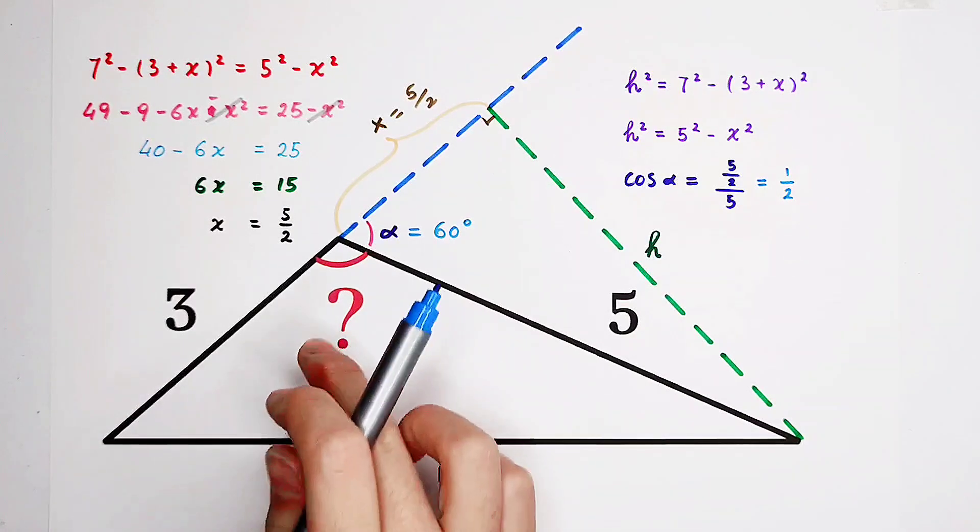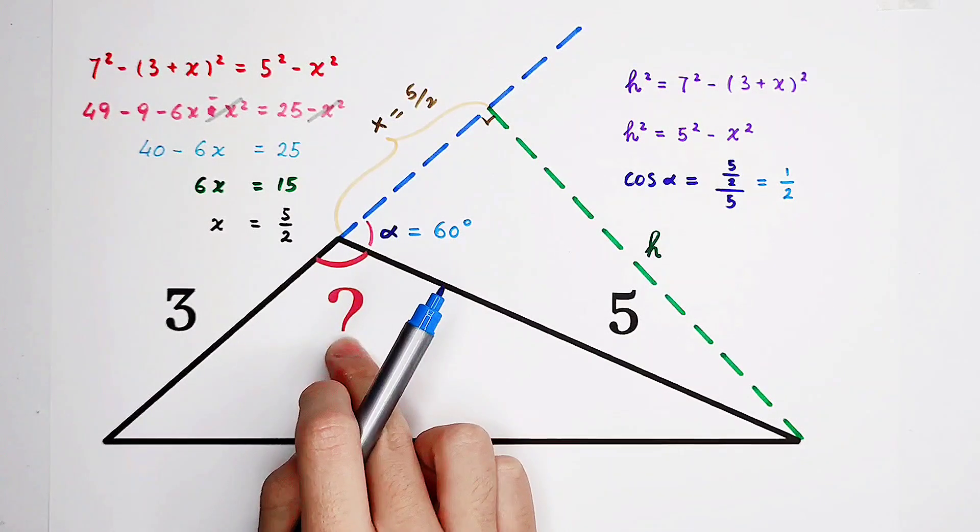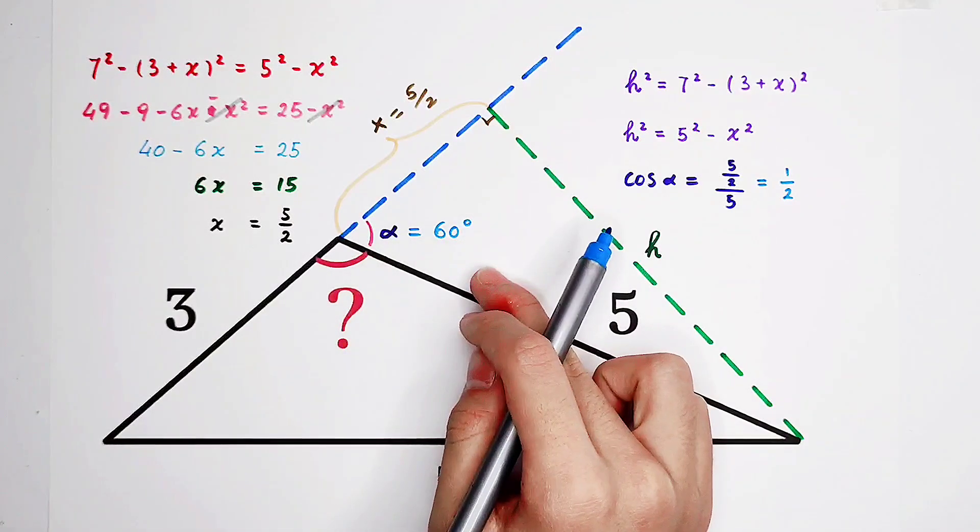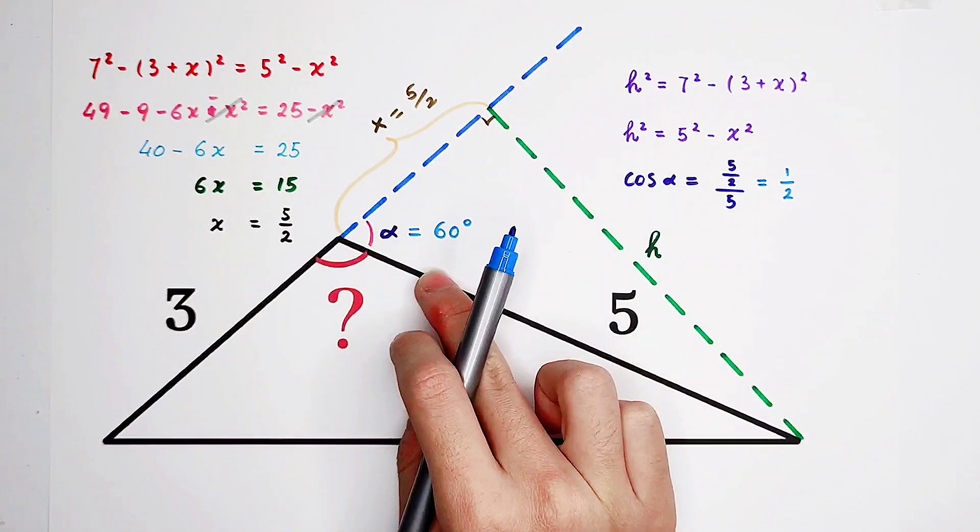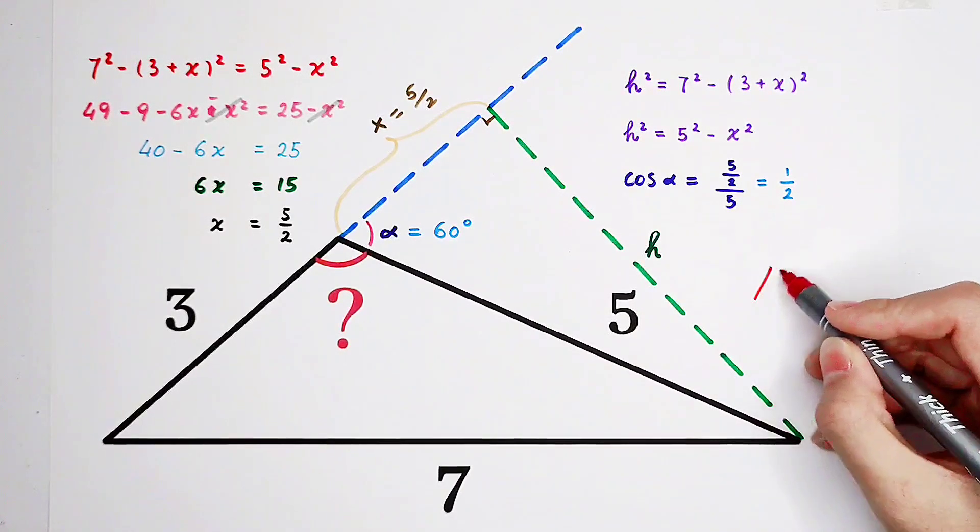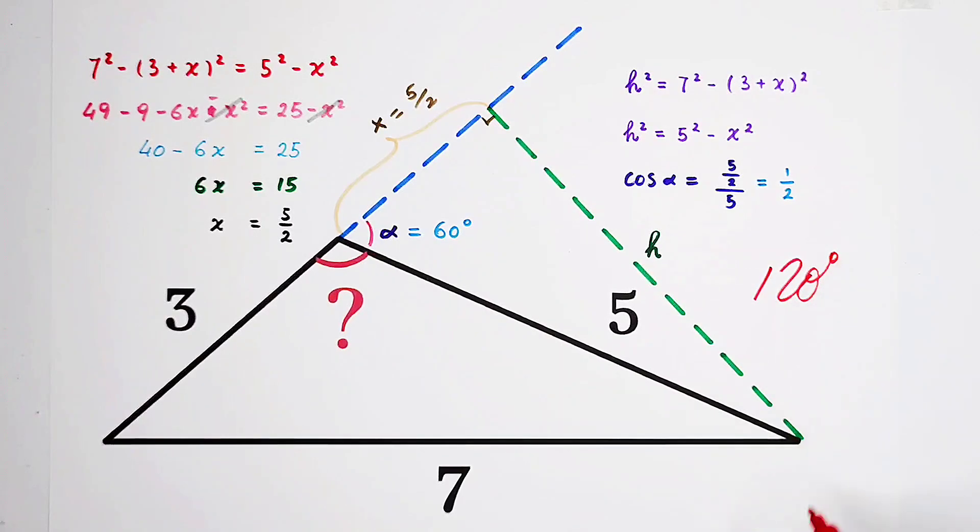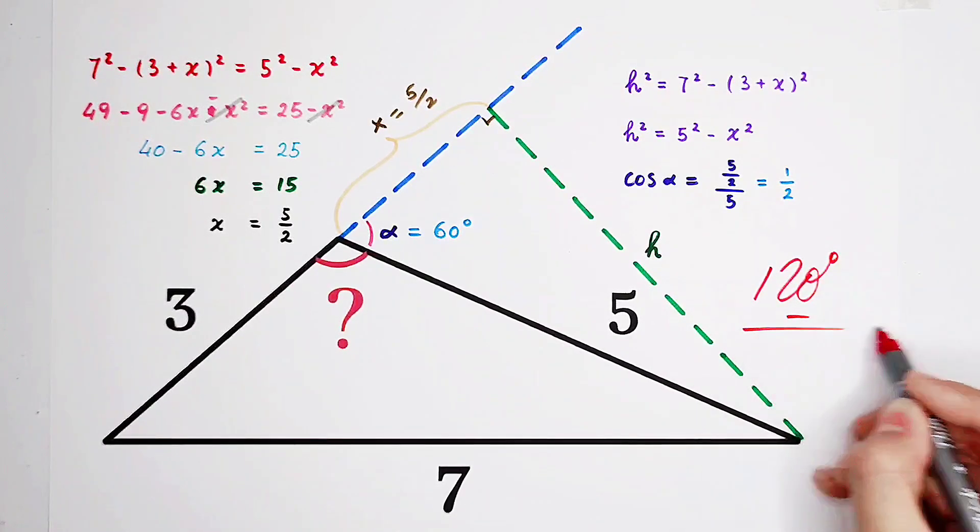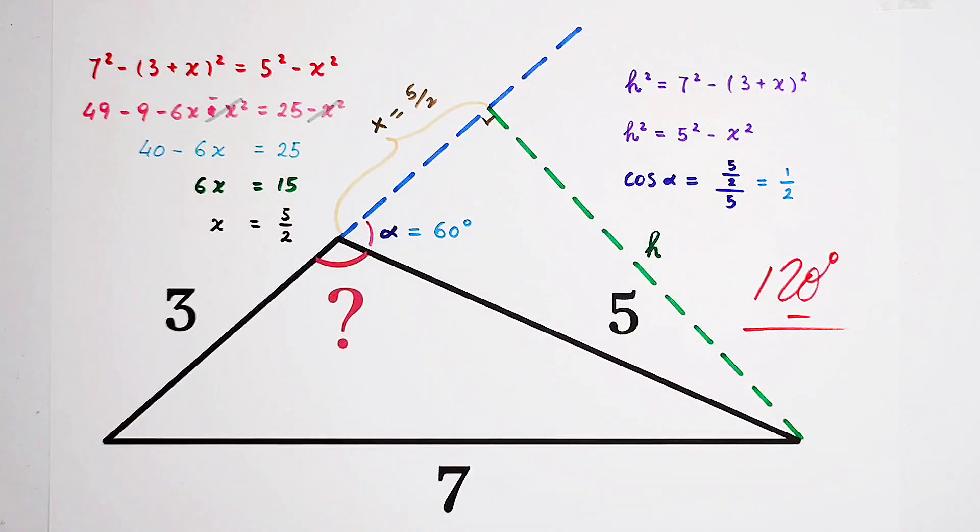So of course, the question mark angle is 180 degrees minus 60 degrees, it is 120 degrees. So the answer is 120 degrees. Do you get it? Give me a thumbs up for this wonderful trick. Don't forget to subscribe to me. We see you next time. Bye-bye!